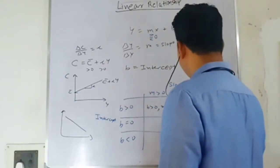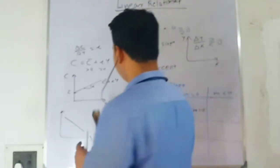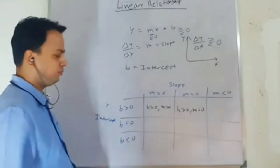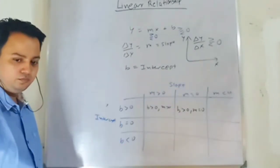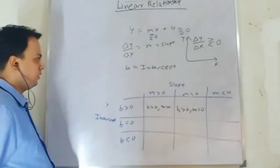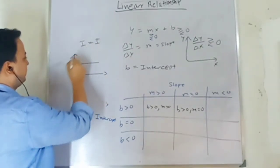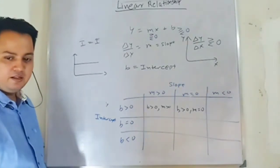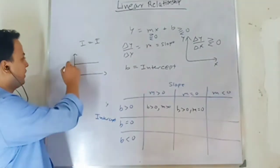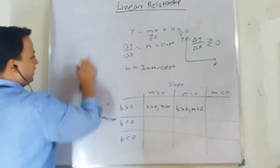The second case: intercept is positive but slope is equal to zero. Can anyone remember a graph with positive intercept and zero slope? Investment — when your investment is autonomous, you draw it like this — a horizontal line. Also, in perfect competition, firms are price takers and you draw the demand curve as a horizontal line like this.